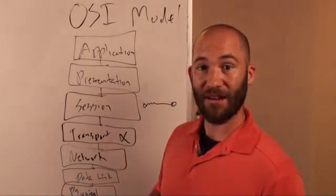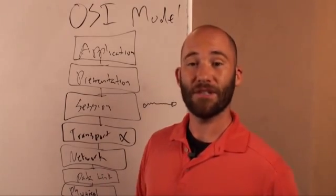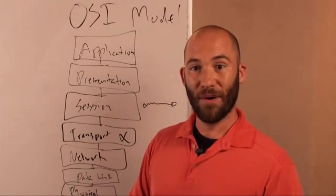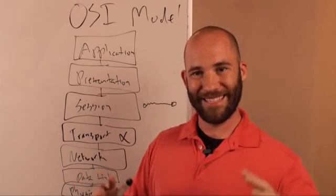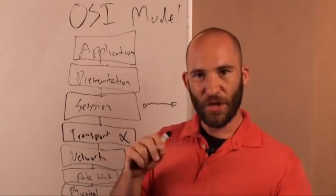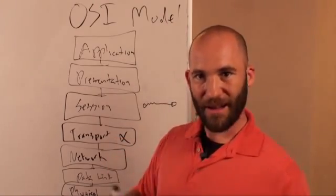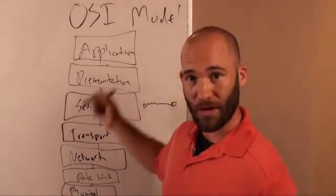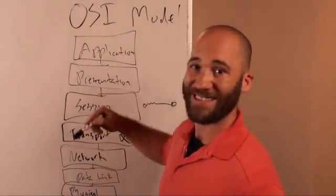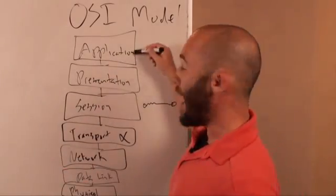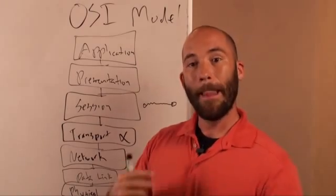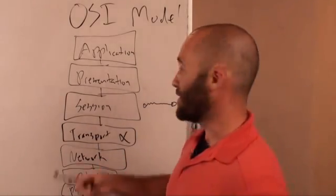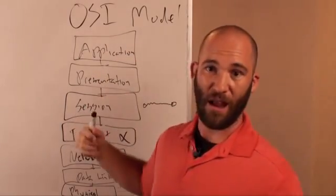Above the session layer is the presentation layer. Basically, the presentation layer is the operating system — it's a lot of configurable information, but not generally what the user is actually playing with. The user is normally up on the application layer. The application layer — whether they're using Outlook, Firefox, Internet Explorer, Chrome, Skype, or whatever — is the actual application that the user is interacting with to send information back and forth.